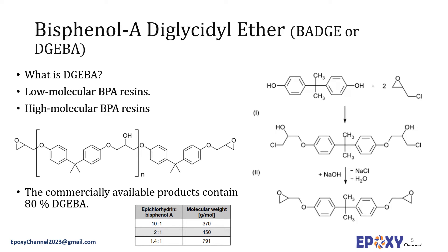The reaction between bisphenol A and epichlorohydrin, followed by dehydrogenation, yields the bifunctional epoxy as illustrated, and bisphenol A diglycidyl ether (DGEBA) is produced. The chlorine atom is released as sodium chloride (NaCl) and the hydrogen atom as water. The compound is a colorless viscous liquid; commercial samples can appear pale to yellow colored. It is a key component of many epoxy resin formulations.